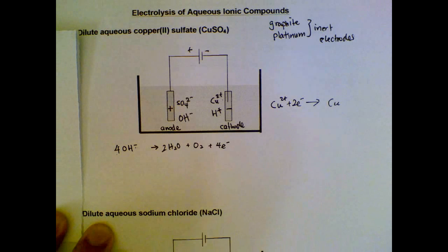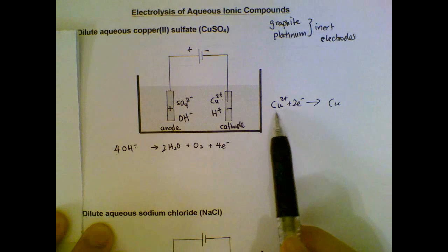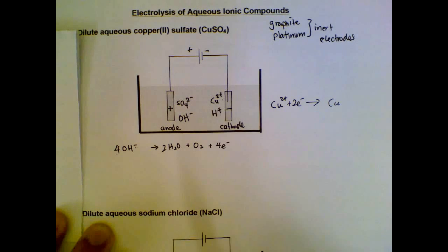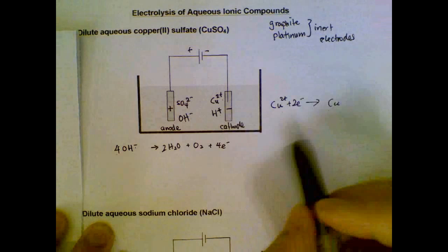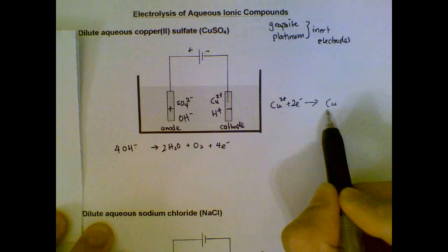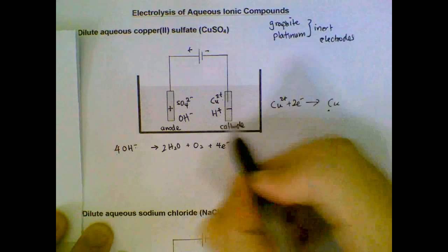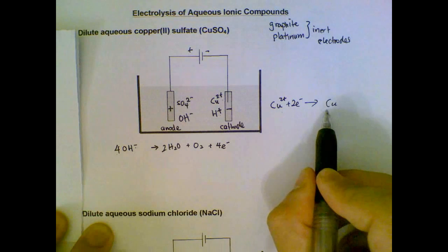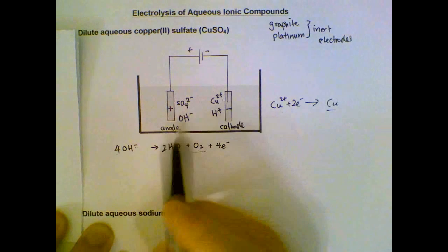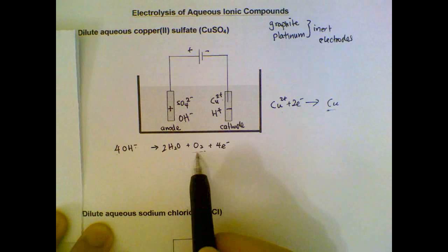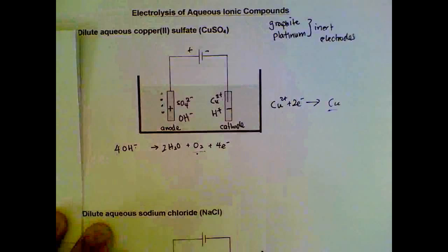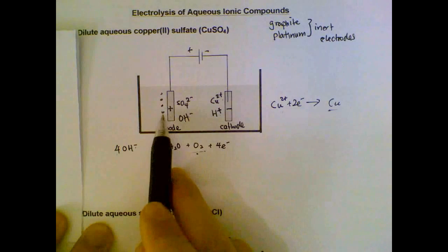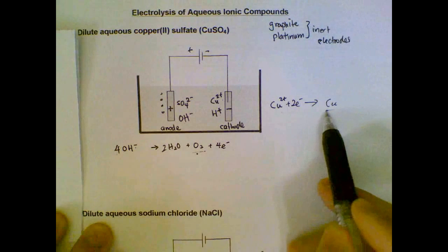Now, what other observations can we make using this setup? At the cathode, we can observe a reddish-brown deposit of copper forming. At the anode, we will see the production of oxygen gas — in other words, effervescence — and the gas will relight a glowing splint. So we can discuss observations in terms of the products that form at the cathode and at the anode.